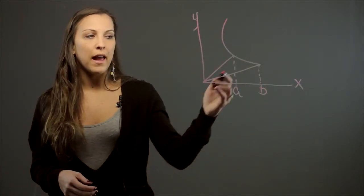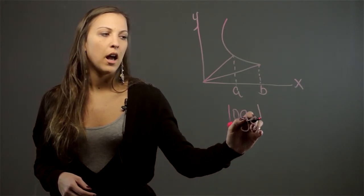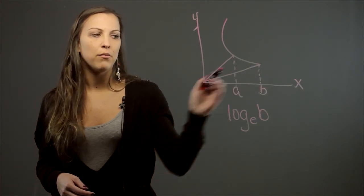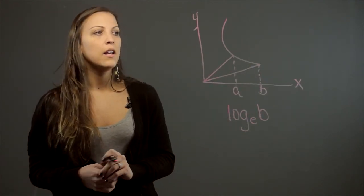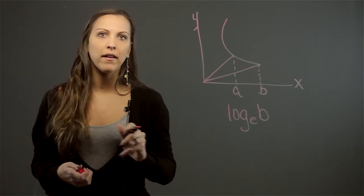So in order to find the area of this sector, I need to do the log base E of B, and B is always going to be the point of the x-axis where the second ray reaches out. So log base E of B is how you'll find the area of the hyperbolic sector that corresponds to the hyperbolic angle.